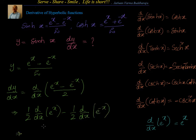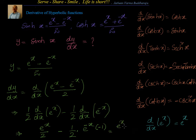The derivative of e^x is e^x, so we have e^x/2. For e^(-x), we apply the chain rule: derivative of e^(-x) is e^(-x) times the derivative of (-x), which is -1. So we get e^x/2 minus (1/2)·e^(-x)·(-1), which equals (e^x + e^(-x))/2. That is nothing but cosh(x). So the derivative of sinh(x) is cosh(x).